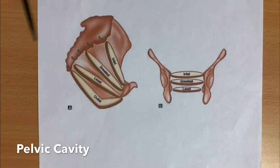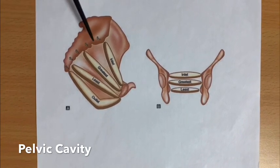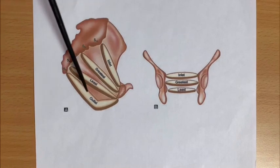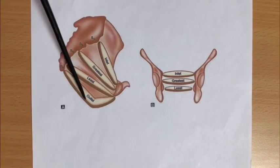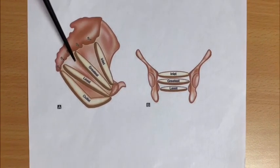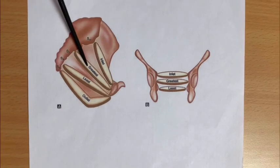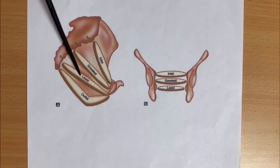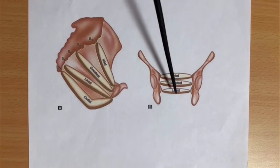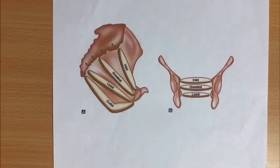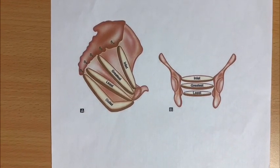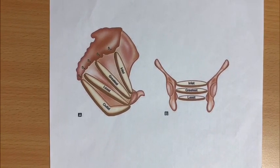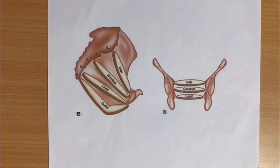The pelvic cavity is bounded above by the inlet and below by the outlet. In the cavity there are two planes: the plane of greatest pelvic dimensions and the plane of least pelvic dimensions. The cavity is almost rounded, so the anteroposterior diameter is equal to the transverse diameter, measuring 12 cm.